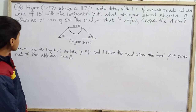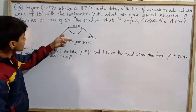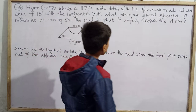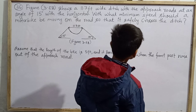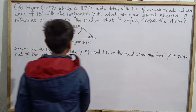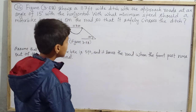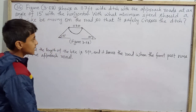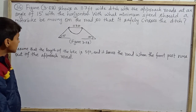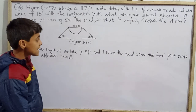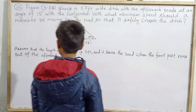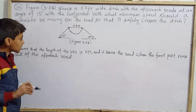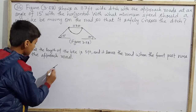Moving to our next question: Figure 3.8 shows an 11.7 feet wide ditch with approach roads at an angle of 15 degrees with the horizontal. With what minimum speed should a motorbike be moving on the road so that it safely crosses the ditch? Assume that the length of the bike is 5 feet and it leaves the road when the front part runs out of the approach road.